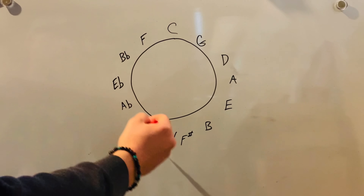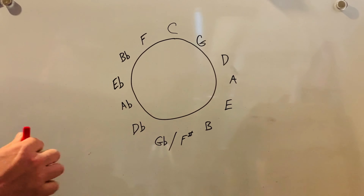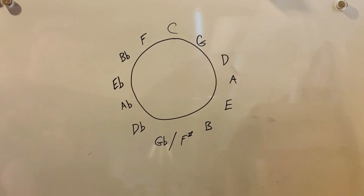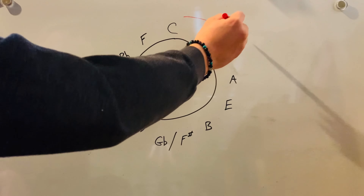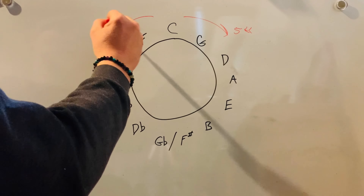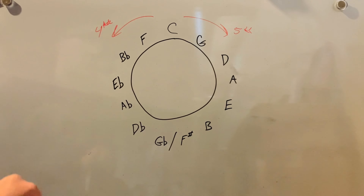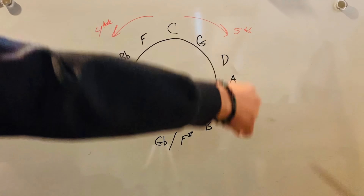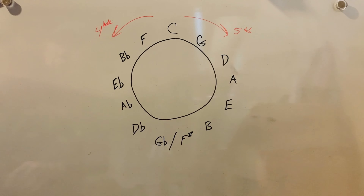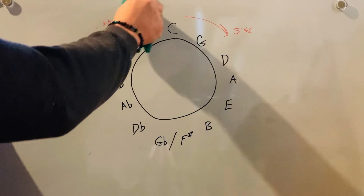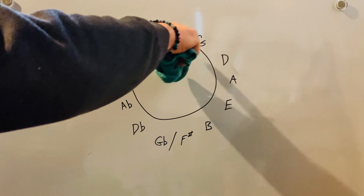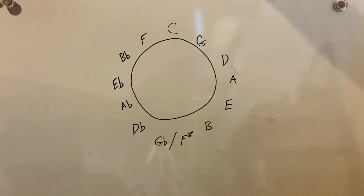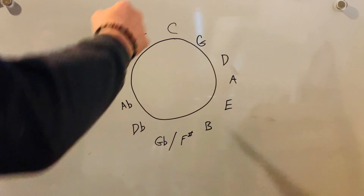If you go counterclockwise, you're going in fourths. So in the key of C, a perfect fourth is F. In the key of F major, a perfect fourth is B flat. So clockwise you're going in fifths, counterclockwise you're going in perfect fourths. I won't get into why they're called perfect fifths or perfect fourths today — that's a lesson about intervals — but that's how it works and that's why it's called the Circle of Fifths.